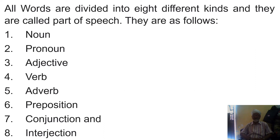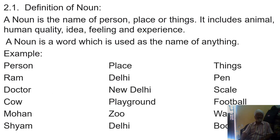In this video, we shall go through the noun and its definition. Definition of noun: a noun is the name of a person, place, or thing. It is a very old definition. It includes animal, human, quality, idea, feeling, and experience. These are the things which compel us to produce sound.